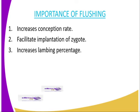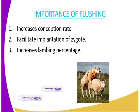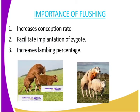What are the importance of flushing? This feed, which is highly nutritive, is provided to serve the following purposes: number 1, increase the conception rate; number 2, facilitate implantation of the zygote; number 3, it increases the lambing percentage, especially in sheep. If you do flush feeding, the sheep may conceive triplets or quadruplets, giving up to four lambs by the end of the gestation period.